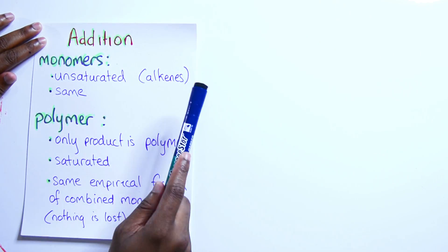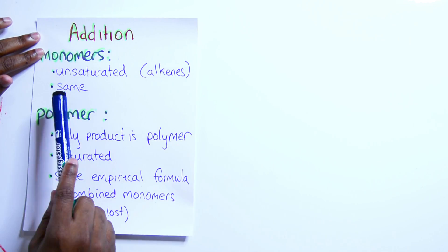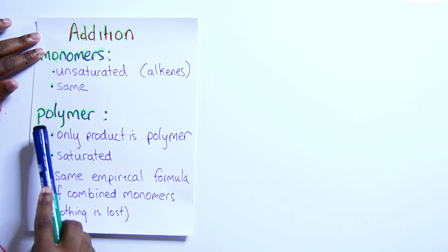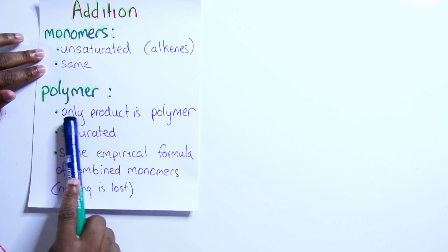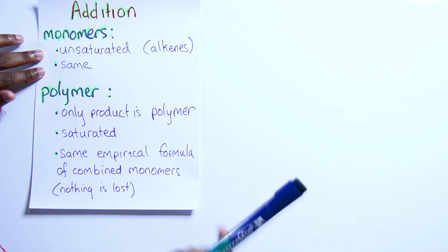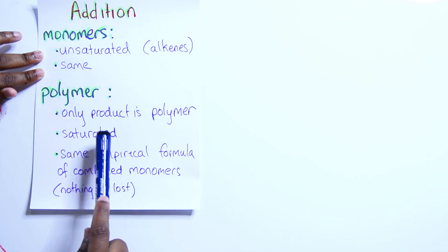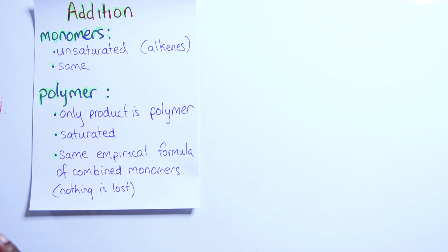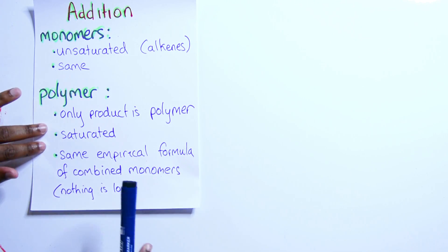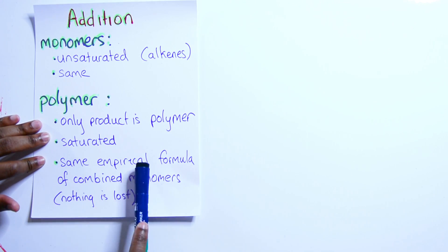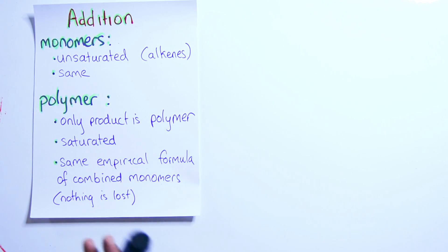Quick recap: in addition polymerization, monomers are unsaturated — like alkenes — and they are all the same, so the same thing repeats over and over. The polymer is the only product; we don't get any byproducts. The polymer is saturated because the double bonds broke and now only single bonds remain throughout.